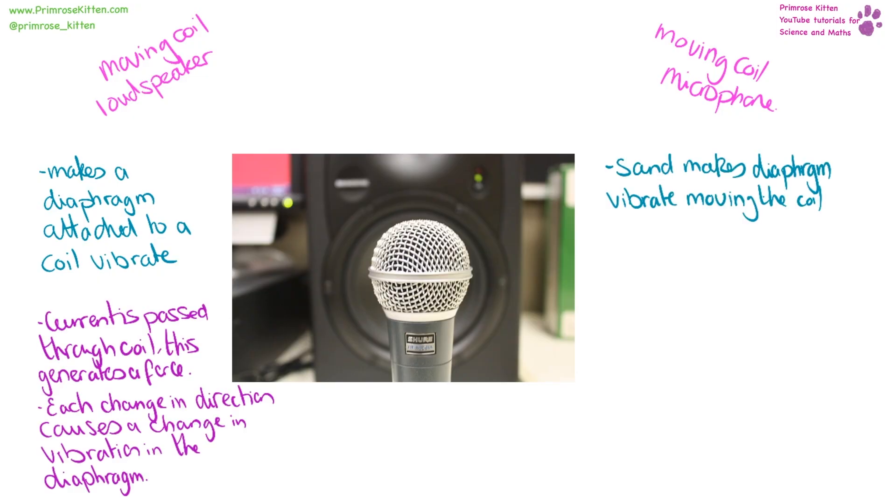A moving coil microphone works with the same principle, but in the opposite direction. Sound causes the diaphragm to vibrate. The diaphragm is attached to the coil. The vibration of the diaphragm moves the coil, which is going to cause the coil to move backwards and forwards past the magnet.